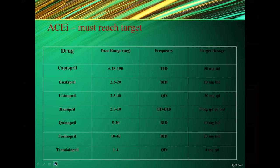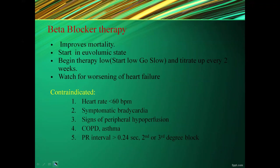ACE inhibitors used include captopril, enalapril, lisinopril, ramipril, quinapril, and trandolapril, with target doses such as captopril 50 mg TID, enalapril 10 mg BID, lisinopril 20–40 mg daily. Beta blocker therapy improves mortality; start in euvolemic state, begin low and titrate slowly every 2 weeks, watching for worsening heart failure. Contraindicated with heart rate <60 bpm, symptomatic bradycardia, peripheral hypoperfusion, COPD, asthma, or PR interval >0.24 seconds or second/third degree block.